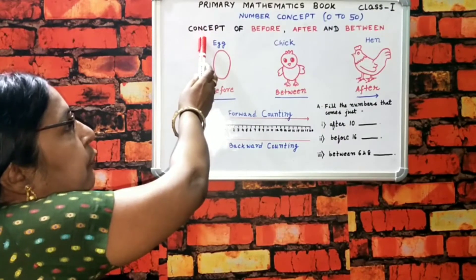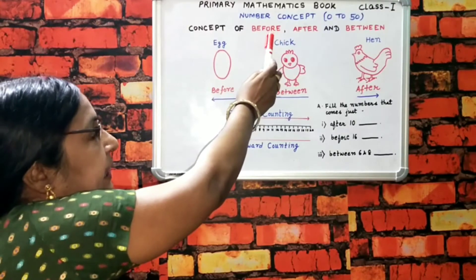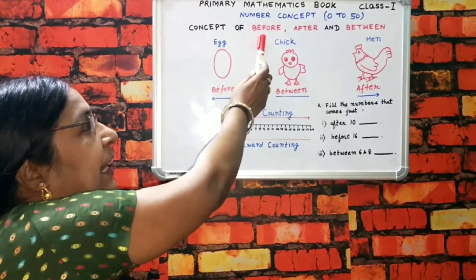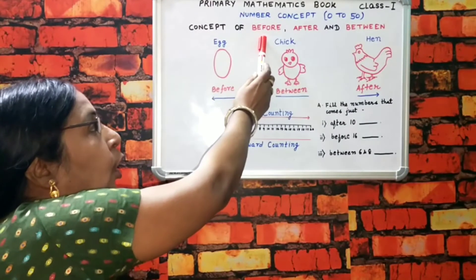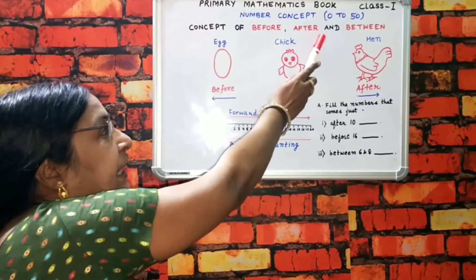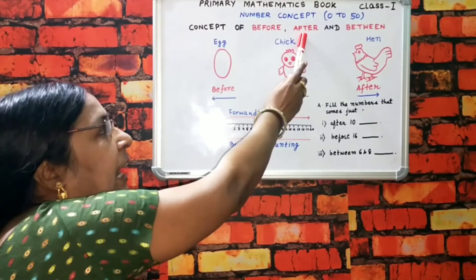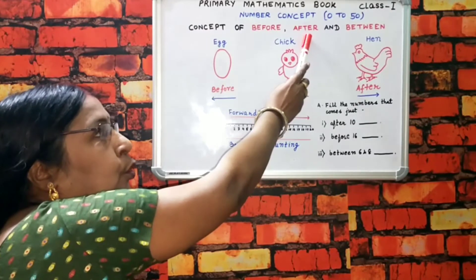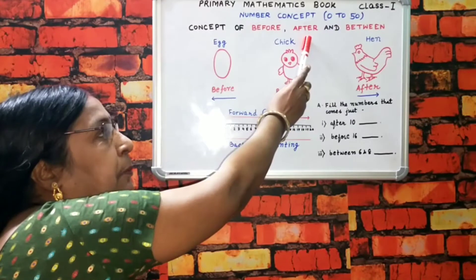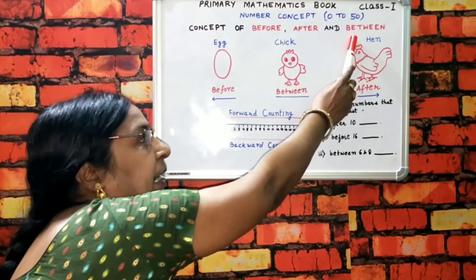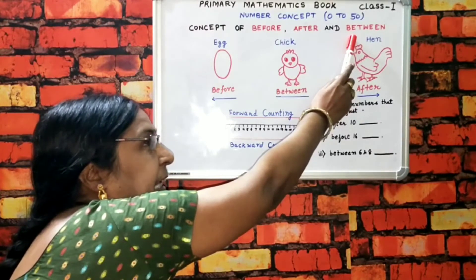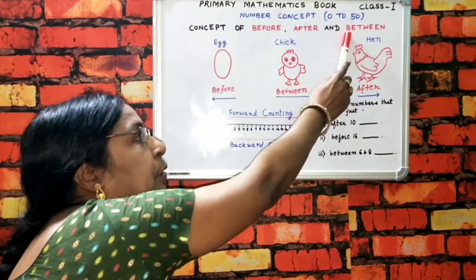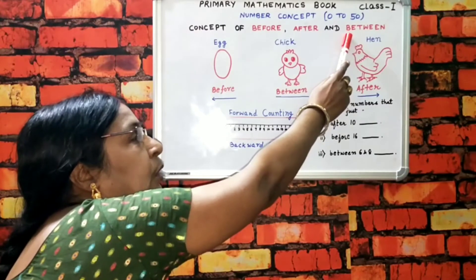In number concept, we have to know: for any number — for example, 3 — what comes before 3? 3 ke pehle kaun sa number aata hai? 2, right. After means: 4 ke after 5. And between means in the middle — beech mein. What number comes between 12 and 14? 12 aur 14 ke beech mein kaun sa number aata hai? 13.